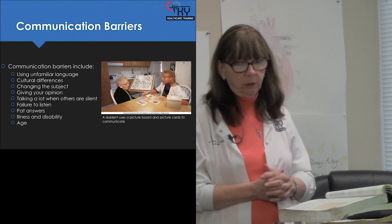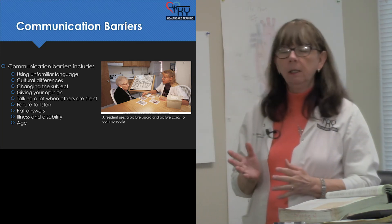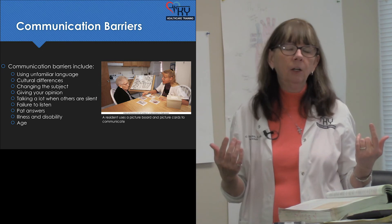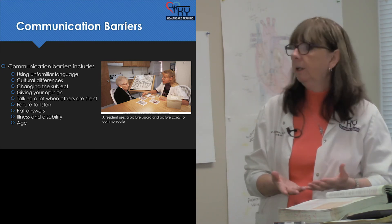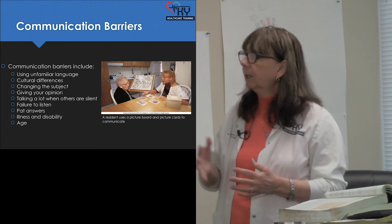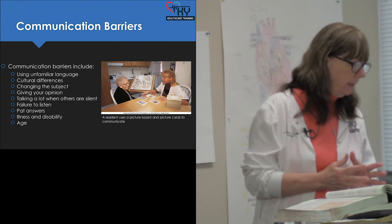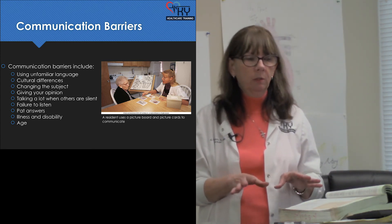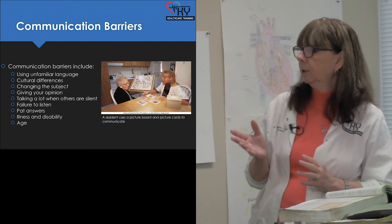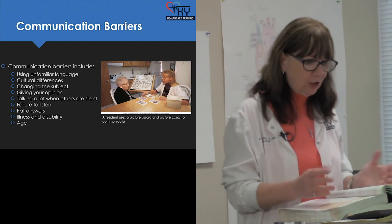Barriers to communication include using unfamiliar language, cultural differences, changing the subject, giving your opinion, and talking a lot when others are silent. Sometimes people with a hearing deficit try to control conversations because they can't hear and don't want to keep asking 'what?' So it looks like they're trying to control the conversation, but it's only because they're embarrassed. Failure to listen can be a barrier. Pat answers — that means you cut them short. Illness, disability, and age can also be a barrier.